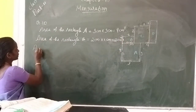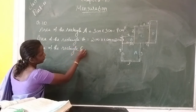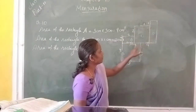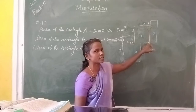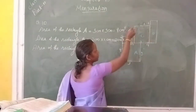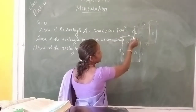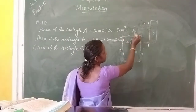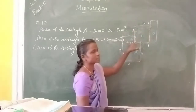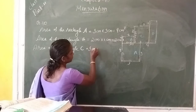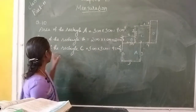Next, area of rectangle C. This is rectangle C. Its length is 3 centimeters, and here also 3 centimeters. For the breadth, this point to this point is 2 centimeters, and this point to this point is 1 centimeter — opposite side also. So, 2 plus 1 equals 3. This distance is 3 centimeters. So, 3 centimeters into 3 centimeters equals 9 centimeters square. That is the area of rectangle C.